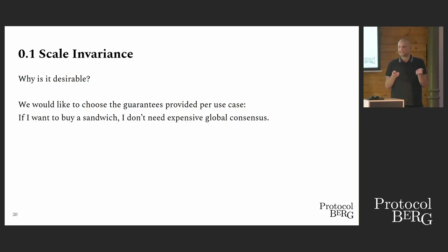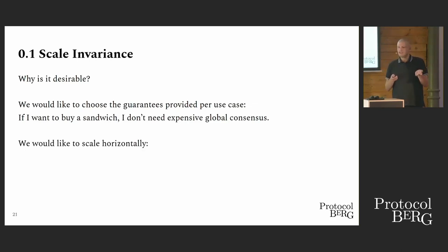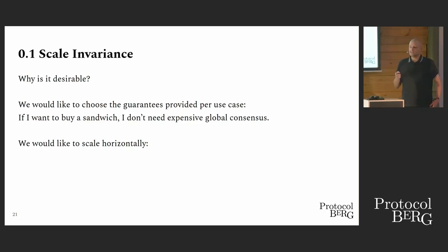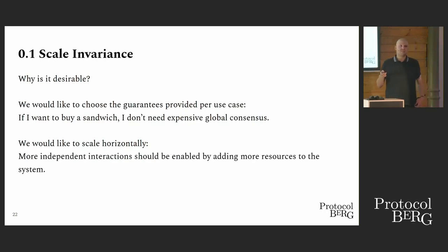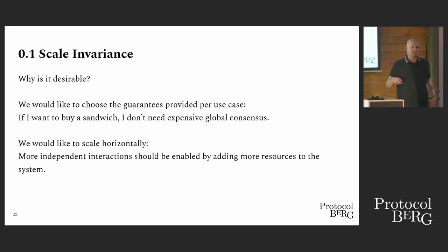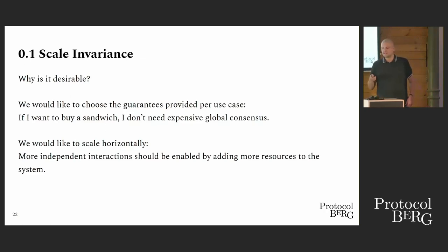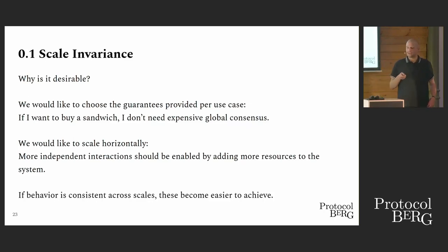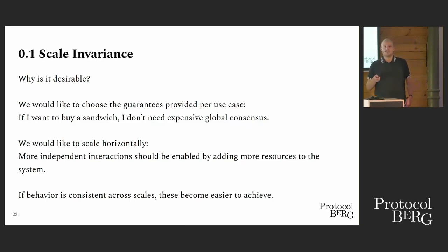We would also like to be able to scale horizontally. For example, if I have independent interactions in a network, I would like to be able to have more of them if I add more resources. But if I have a non-scaling system, then that doesn't matter. Our conjecture is that this behavior is easier to achieve if we have a scale-invariant system.